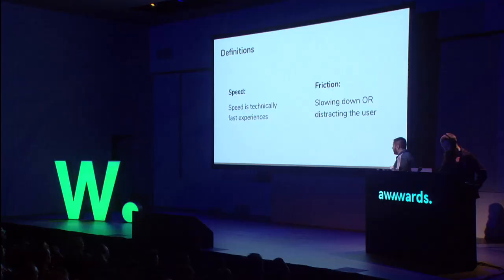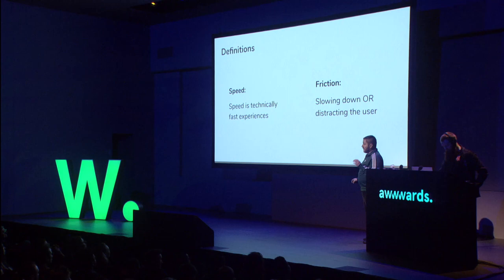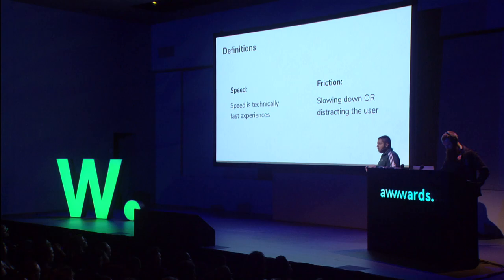Before I get onto it, I want to give some definitions. When I'm talking about speed, I'm speaking about the technical things you can do to improve the speed of your site — optimizing your images, minifying code, stuff like that. When I'm speaking about friction, I'm talking about the things that we do to deliberately slow down the user and distract them. By the end of the talk, I'm sure I'll have convinced you that slowing someone down actually makes them speed up, which makes no sense, but it will.